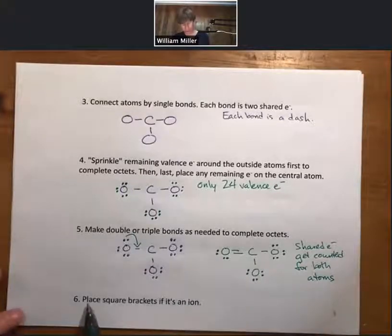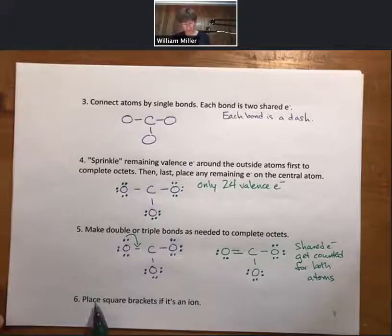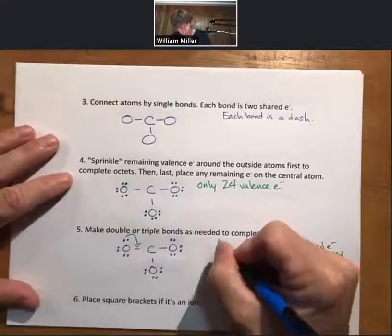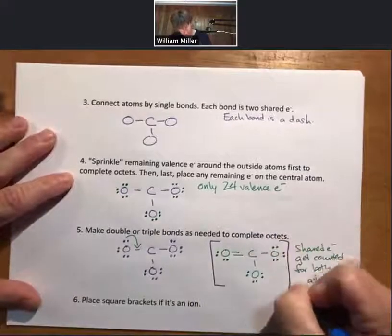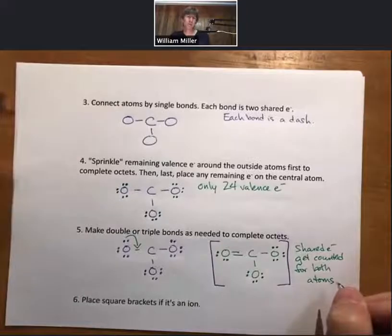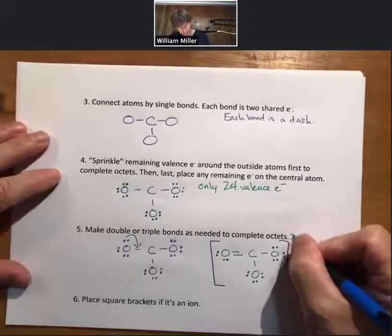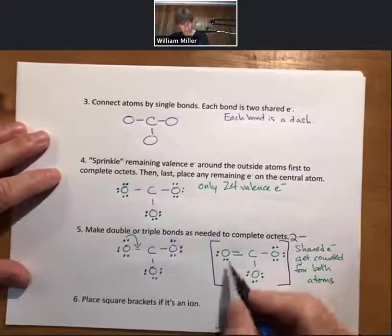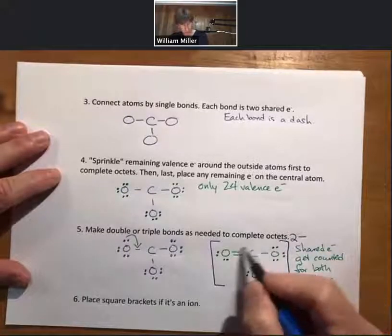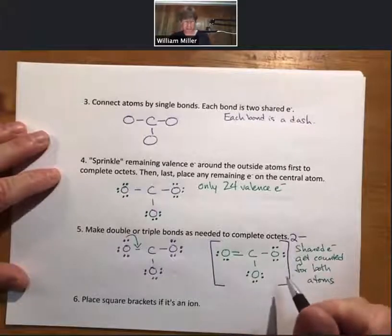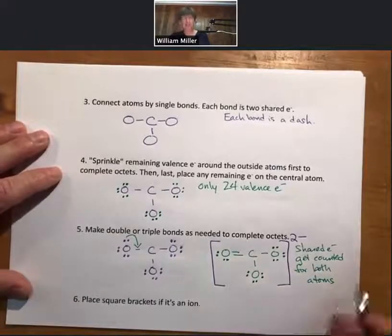Now, since this is an ion, we do have to do step six. It says place square brackets if it's an ion. I'll do that part in blue. So square brackets look like the same kind of brackets that you would use for molarity concentration, and two minus up here. And so in square brackets, this Lewis structure with the two minus is our final answer. So our final answer.